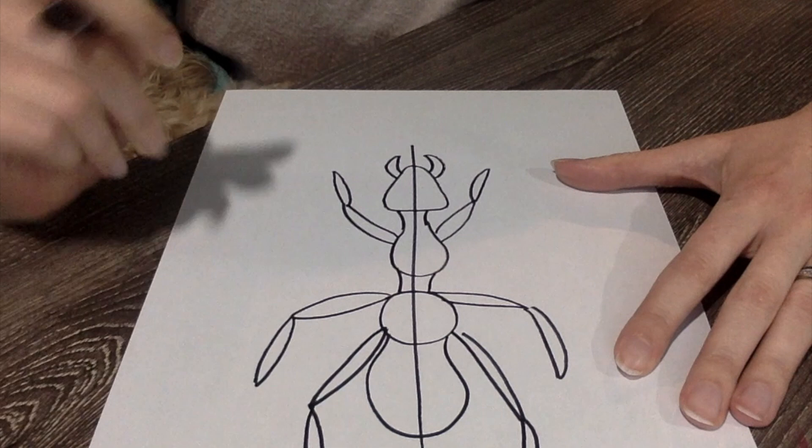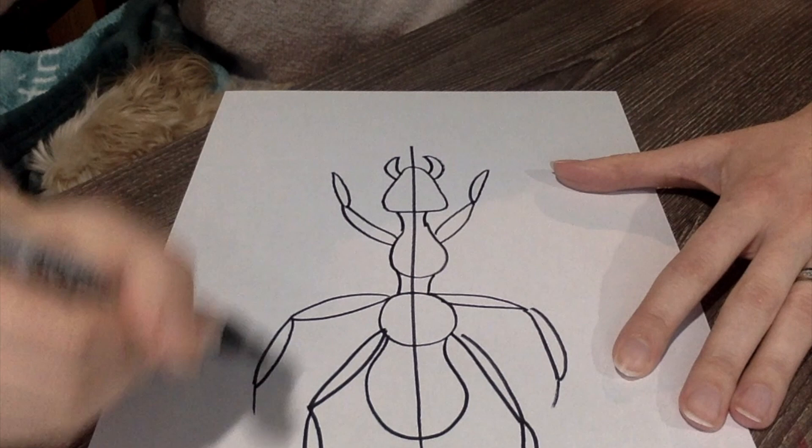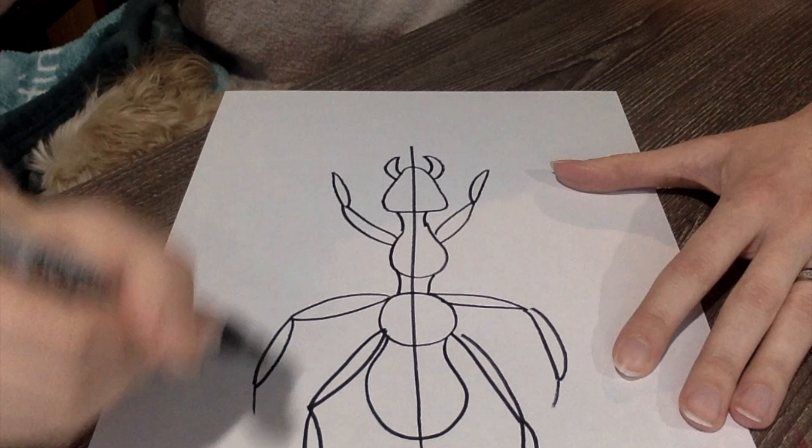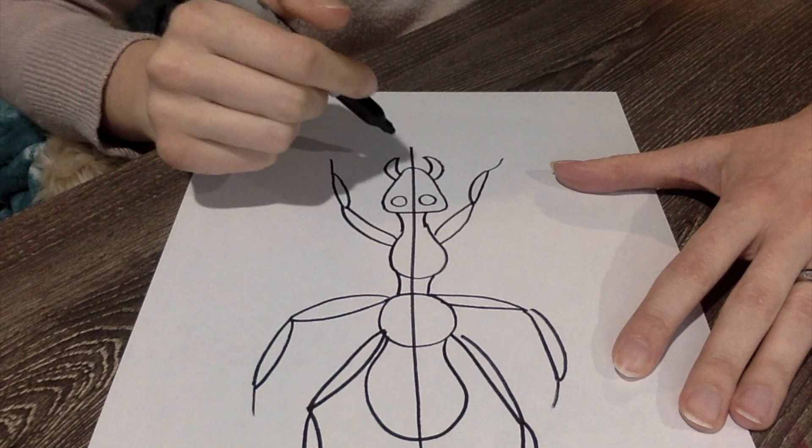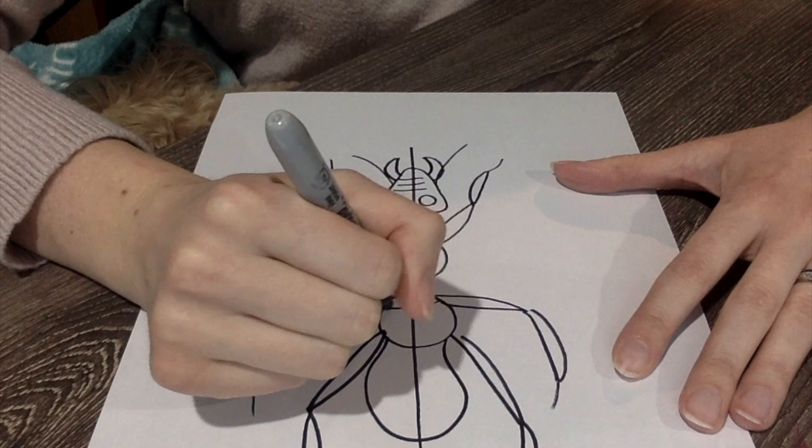And then once I have that, I'm going to put some little feelers at the end here. And some eyeballs. There we go. Maybe some feelers up here as well. Maybe some lines across. Maybe even some lines down here too.